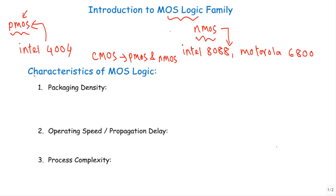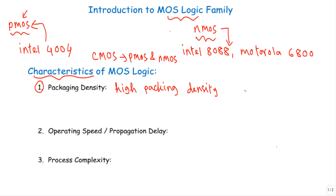The first characteristic is packaging density. Packaging density indicates how many active devices we can incorporate in a single chip. MOS logic circuits have high packaging density, making them compatible for large scale integration or LSI technology, which means incorporating around 100 to 1000 active devices in a single chip. This is why MOS logic circuits are found in calculator chips, microprocessors, and microcontrollers using LSI technology.